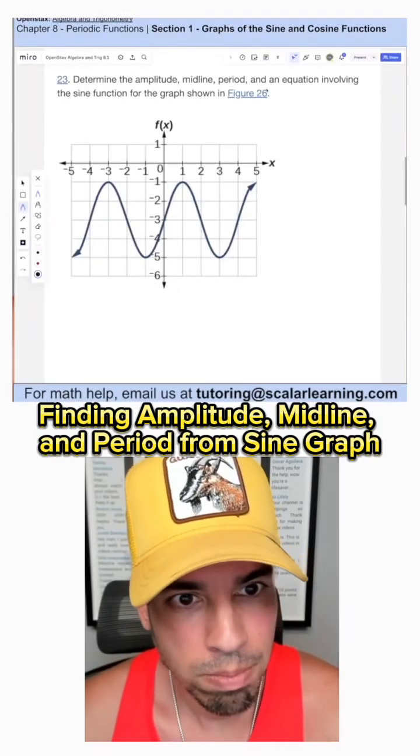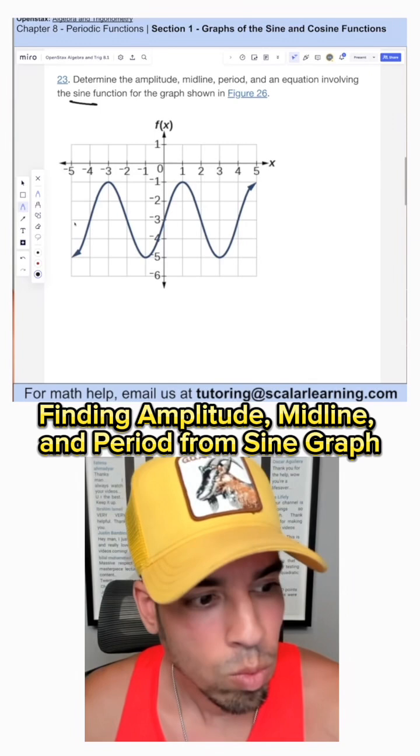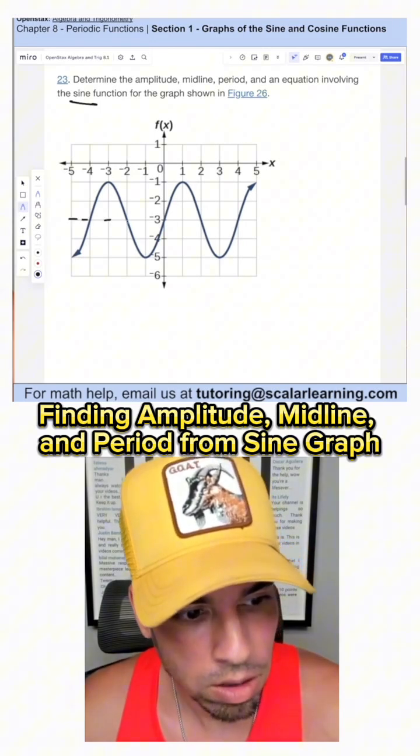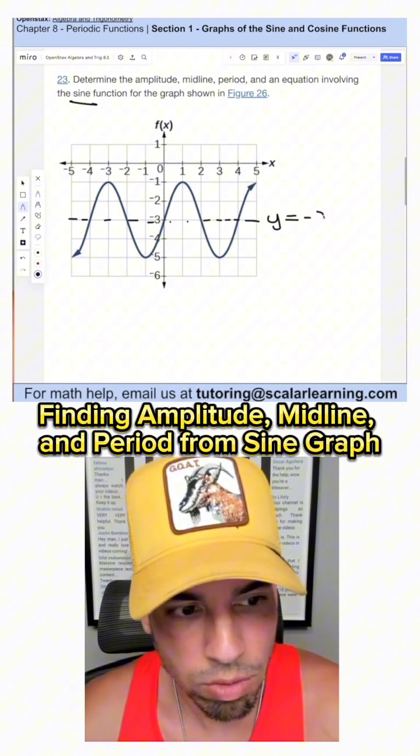This one says determine the amplitude, midline, period, and an equation involving the sine function. So what is the midline first? The midline is literally this line that goes right through the middle. And that's y equals negative three.